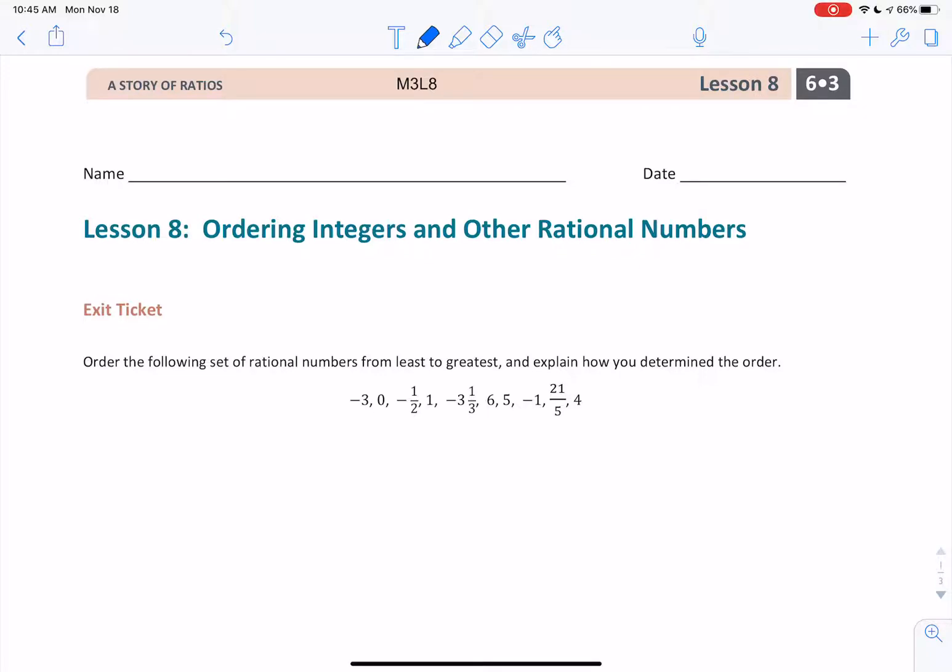Welcome to the exit ticket for Module 3, Lesson 8, Ordering Integers and Other Rational Numbers. All I have to do on this one is put these numbers from least to greatest. I will be using a number line to support my work.